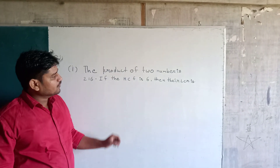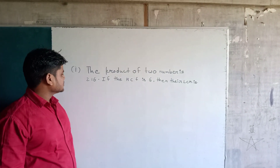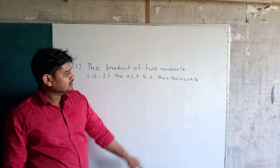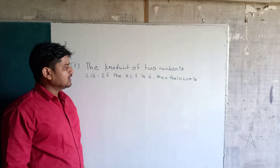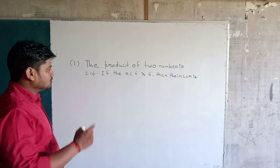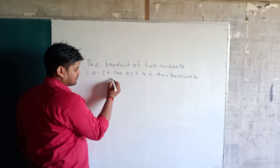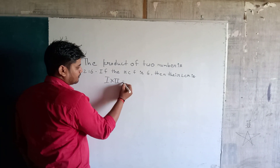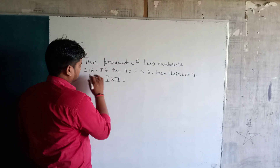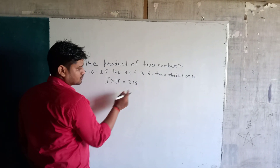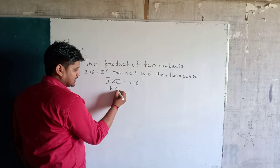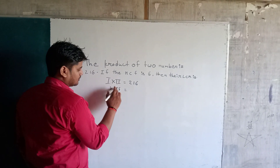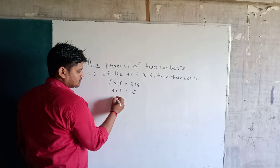The product of two numbers is 216 and the HCF is 6. The question is: the first number and second number product is 216 and HCF is 6, so find the LCM.